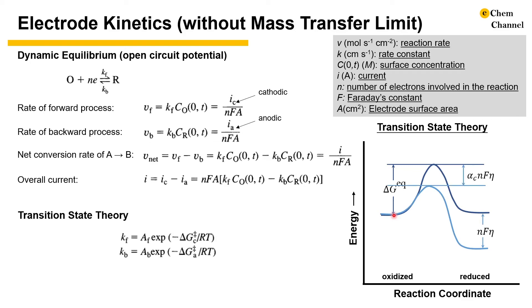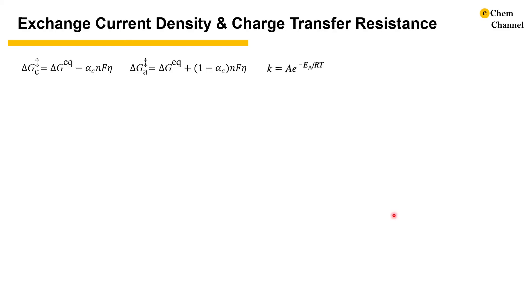Accordingly, the activation energy is lowered by a fraction of that. That fraction is termed as transfer coefficient. Now we have different activation energies for the forward and backward reactions. And the values can be calculated from the activation energy at equilibrium, transfer coefficient, and over potential.